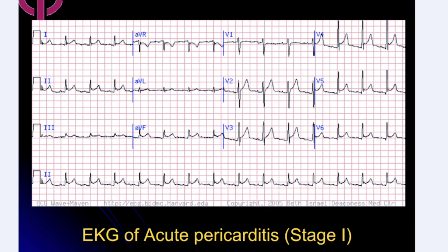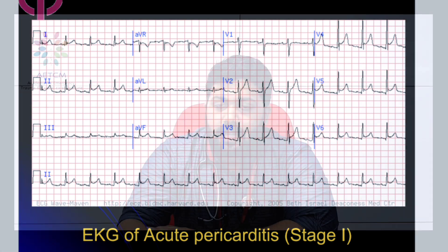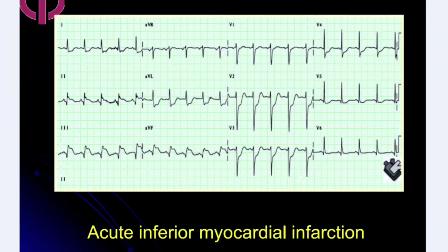In this ECG you can see concave upwards ST elevation in all leads except AVR and V1, which is classical of acute pericarditis in Stage 1. To differentiate from MI: in MI there is ST elevation in contiguous leads — for example leads II, III, AVF — with reciprocal ST depression in opposite leads such as I, AVL, V5-V6, and V1-V4. If reciprocal ST depression is present, think of acute MI rather than pericarditis.